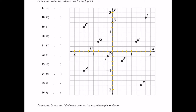Starting with point A, which is down in quadrant three. It looks like that's going to be negative one and a half moving to the left, and then moving down — that looks like negative one. So the ordered pair is negative one and a half comma negative one.